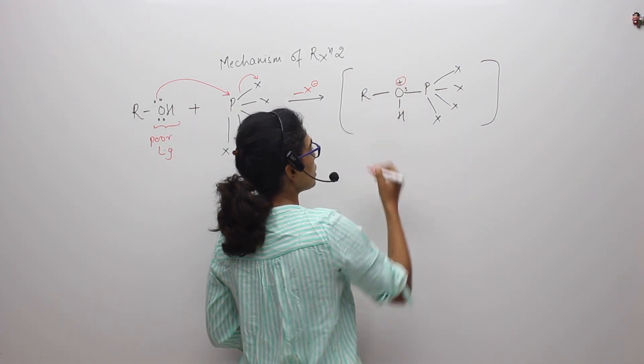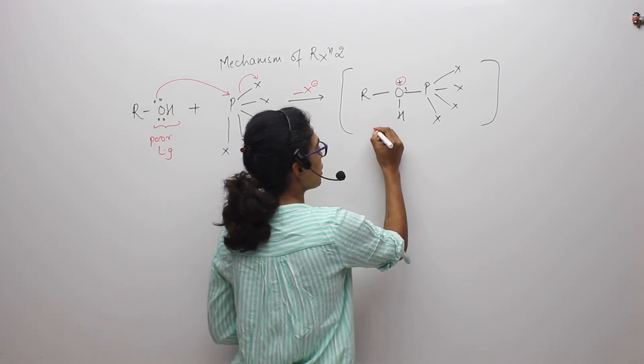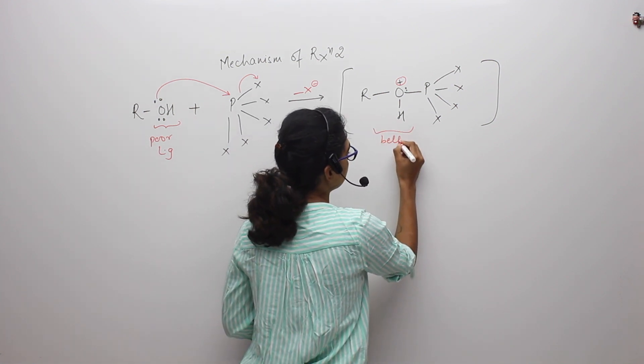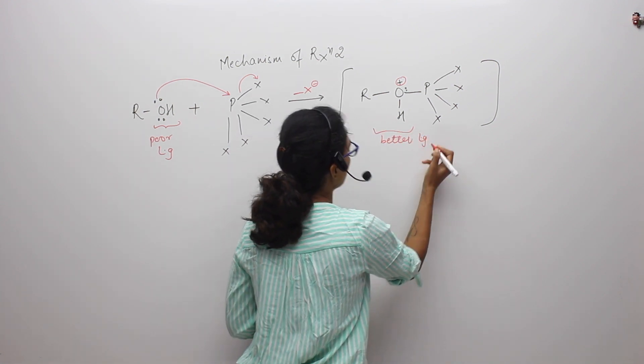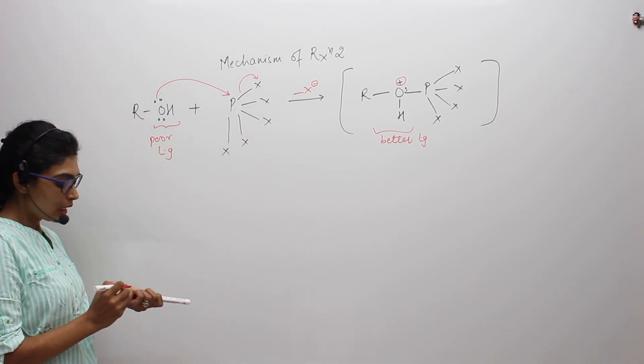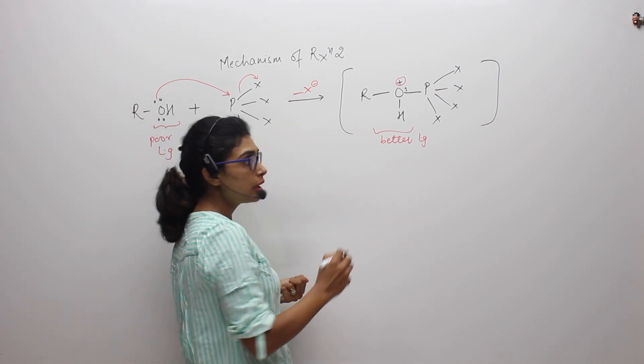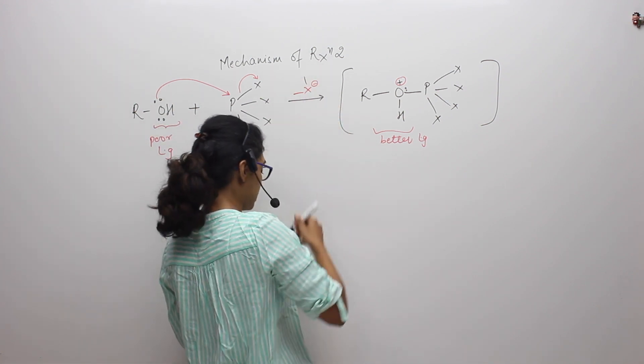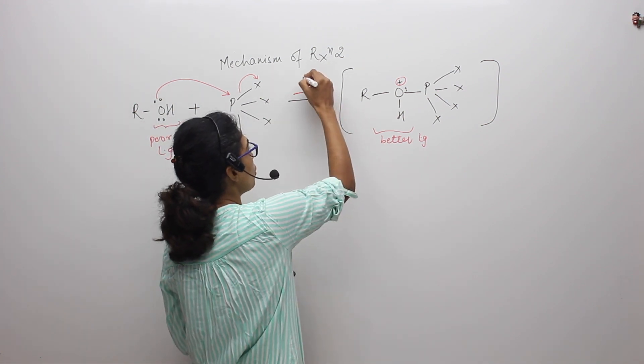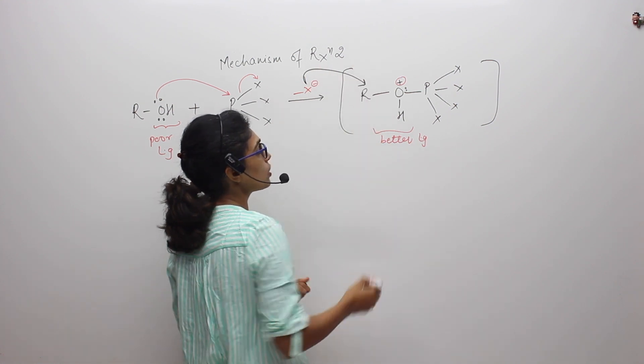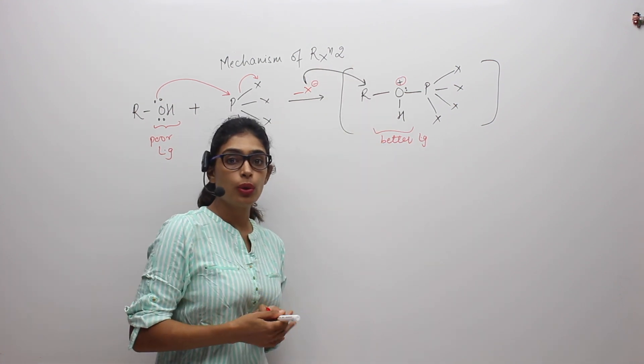Now this oxygen which has gained a positive charge has become a better leaving group as compared to the OH which was there earlier. Moreover, we have X minus in the solution which can attack onto the carbon which is attached to this O so that this O can be kicked out.